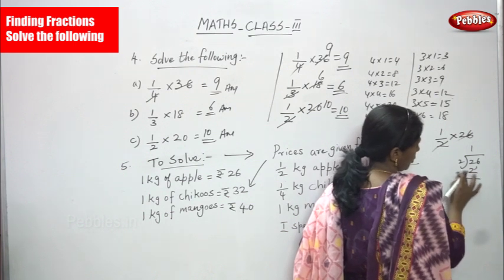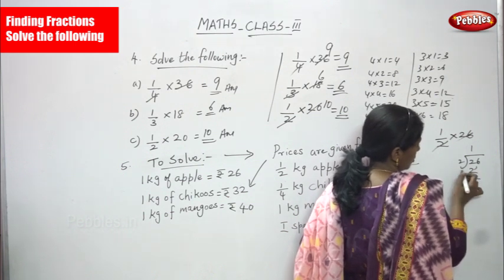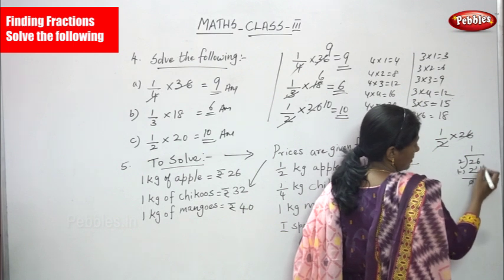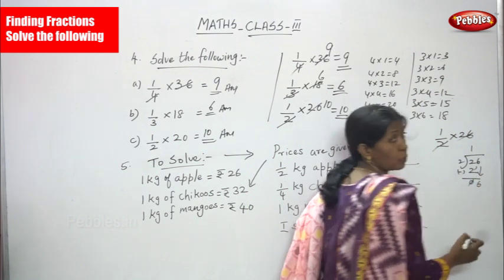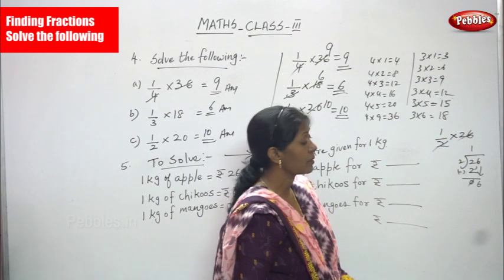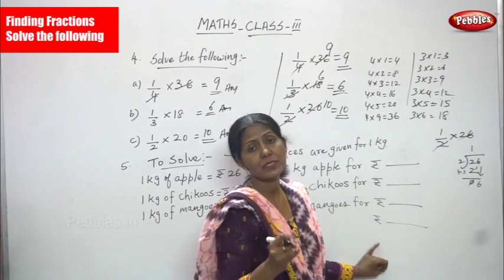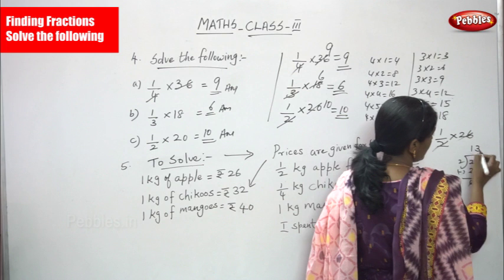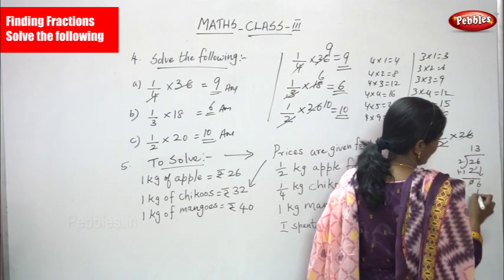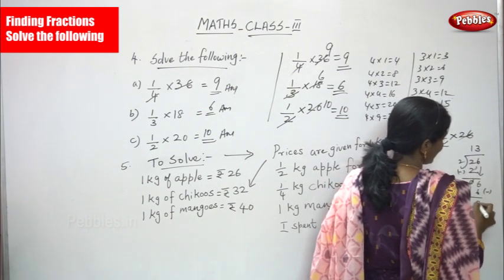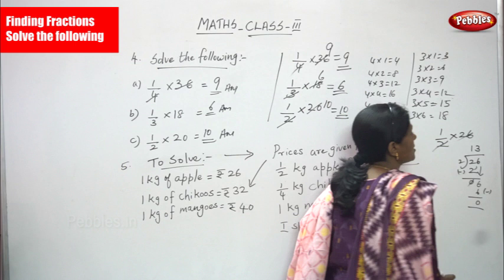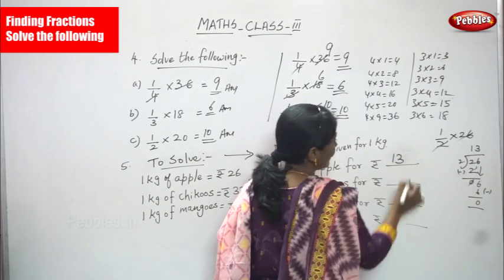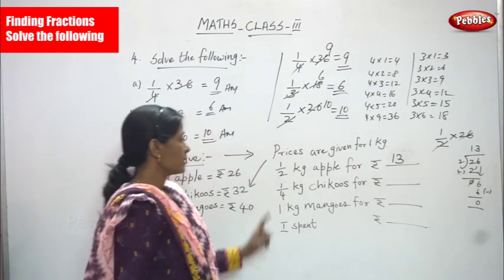Bring down 6. Using the 2 table: 2 1's are 2, 2 2's are 4, 2 3's are 6 — write 3 in the quotient. 6 minus 6 = 0. So the answer is 13. Half kg of apple costs rupees 13.